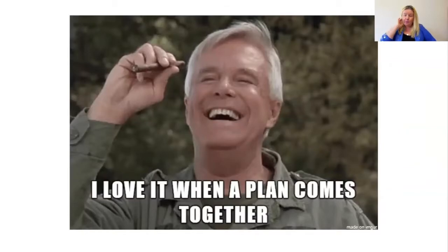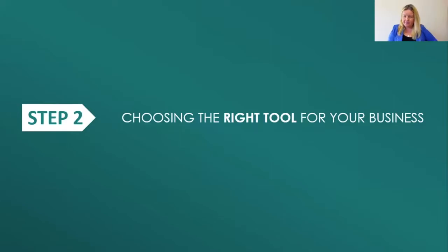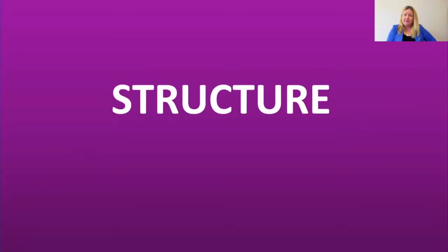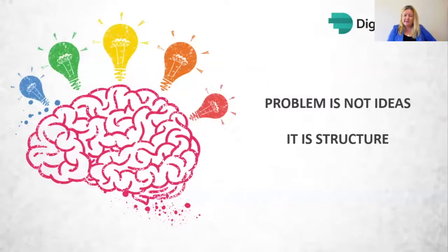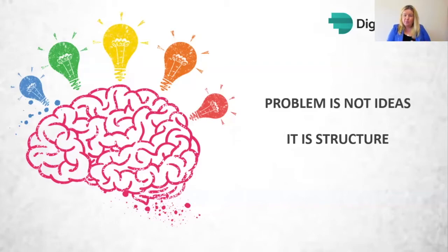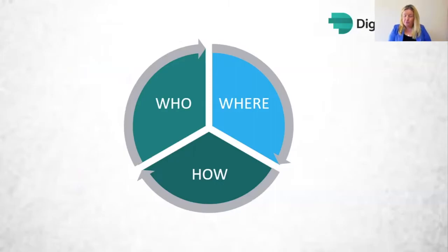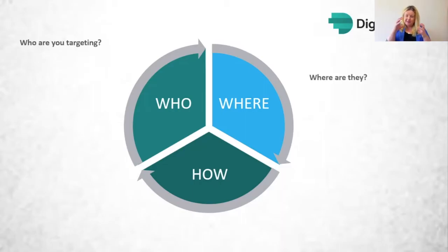The next bit is about choosing the right tool for your business — what is the process and structure to make that happen? When I talk to business owners, ideas really aren't the problem. Most people have loads of different ideas going through their business life. But we don't have any structure in which to place that. So I'm going to show you a really simple one-page marketing plan with three elements. The first part: who is it that we're looking to target? The second: where are they — what tools are they using that I can use to communicate to them? And third: how am I going to use those tools to convince them to buy from me rather than another solicitor?